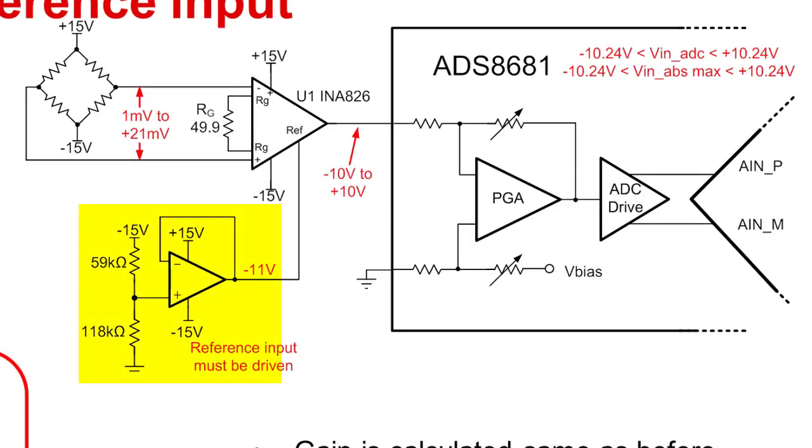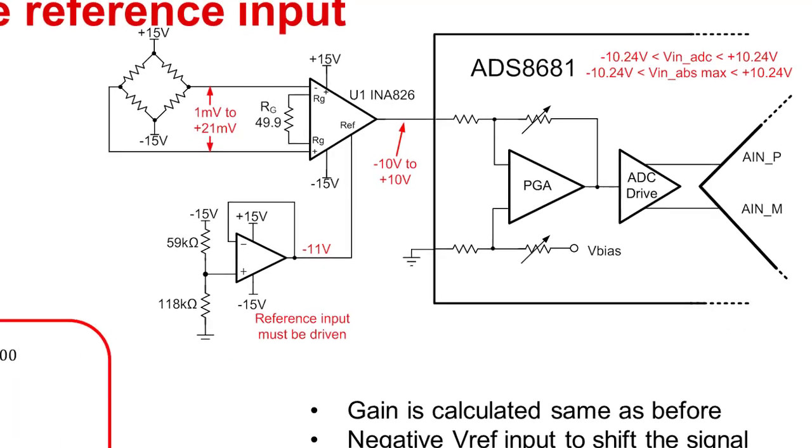This negative 11 volt reference is generated using a voltage divider and an amplifier buffer. It is very important to use a buffer because the input to the INA ref pin is low impedance and errors will occur if you directly connect the voltage divider to the ref input.